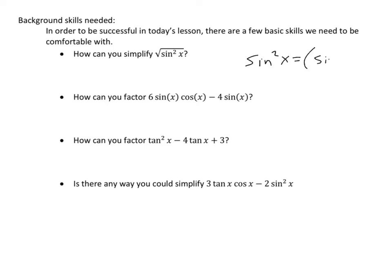When someone writes sine squared x, it really means sine(x) squared. So if someone asks what's the square root of sine squared x, they're really saying what's the square root of (sine(x))². We can simplify this down to sine(x). To be really honest, it would actually be the absolute value of sine x, but discussing why that is is outside the scope of this video, and we're able to get through it without that.